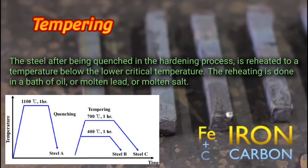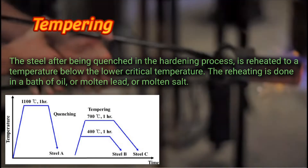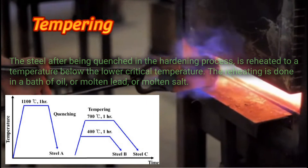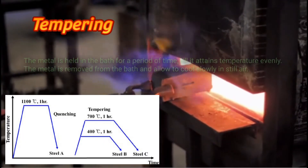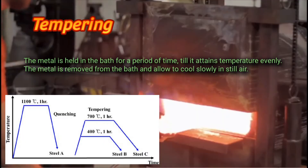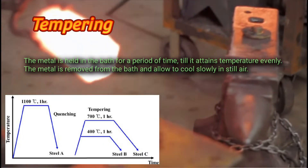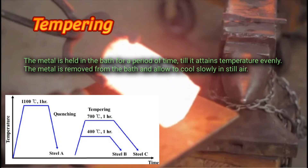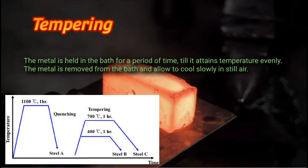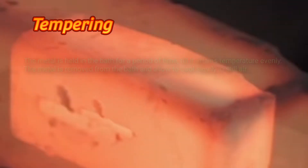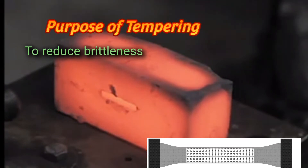The steel, after being quenched in the hardening process, is reheated to a temperature below the lower critical temperature. The reheating is done in a bath of oil, molten lead, or molten salt. The metal is held in the bath for a period of time until it attains temperature evenly.